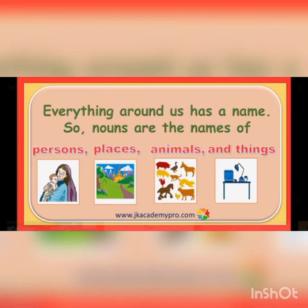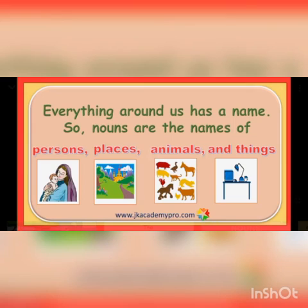And nouns are also names of animals. Any name of an animal — there are many animals, so the names of animals are also nouns. For example: cat, dog, anything. It could be rabbit, it could be lizard, it could be mouse.